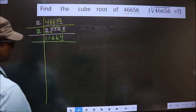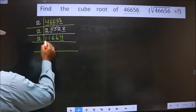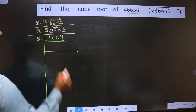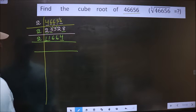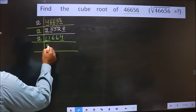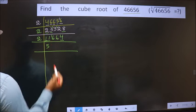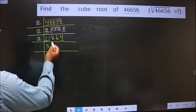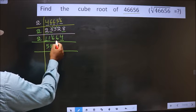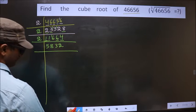For the next number, last digit is 4, which is even, so we take 2. First digit is 1, which is smaller than 2, so we take 2 digits: 11. Closest to 11 in the 2 table is 2×5=10; 11 minus 10 is 1, carried forward making it 16. 2×8 is 16. Next digit is 6 — 2×3 is 6.